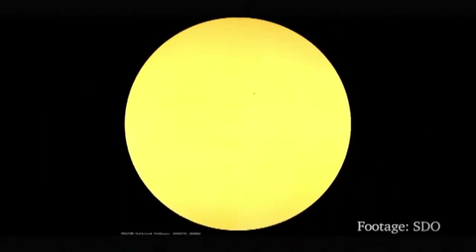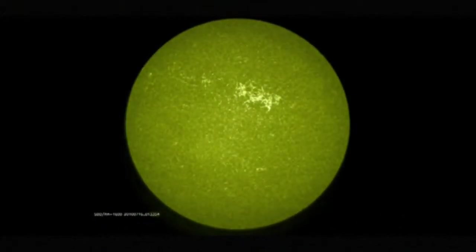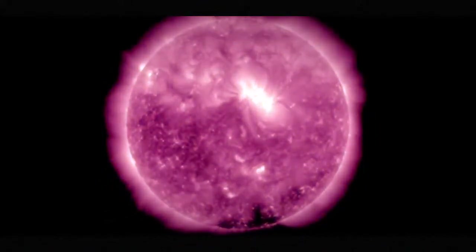Of the satellites currently observing the sun, the newest is SDO, which was launched in February 2010. The satellite can observe the sun in its entirety, in both visible and ultraviolet light. When observed in various types of light, the sun appears in totally different guises.